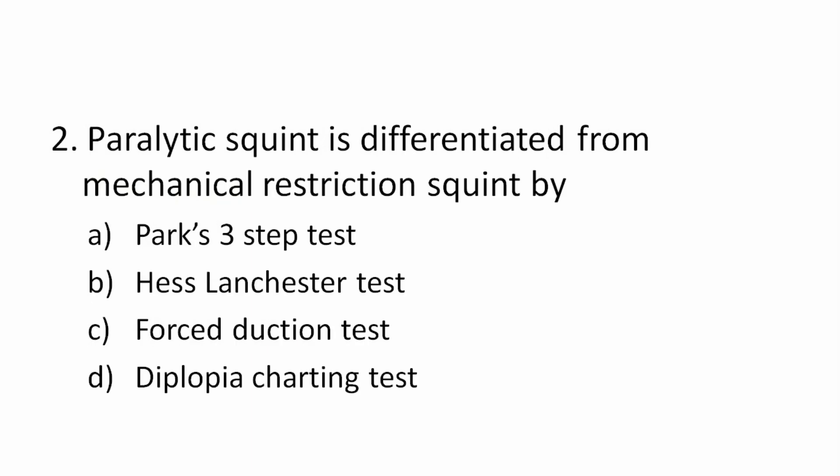Question 2: Paralytic squint is differentiated from mechanical restriction squint by which test? The correct answer is the forced duction test. All of these have different features, but forced duction test differentiates paralytic from mechanical restriction.